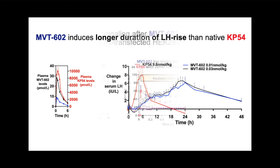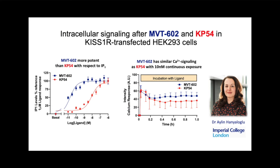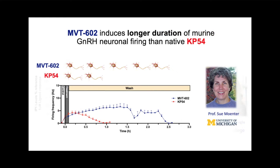Therefore, to investigate this further, Dr. Aileen Hanuloglu at Imperial College London compared the action of NVT602 and Kisspeptin-54 on intracellular signalling in HEK293 cells transfected with the G-protein coupled Kisspeptin receptor. Her group showed that NVT602 was more potent than Kisspeptin-54 with regards to IP1 levels, and that calcium signalling was similar on continuous incubation with these ligands. Professor Sue Monta's group at the University of Michigan conducted electrophysiological studies on murine GnRH neurons to show that NVT602 induced a longer duration of action potential firing compared to native Kisspeptin-54, a finding particularly edifying given the endocrine profiles observed from the clinical studies in women.